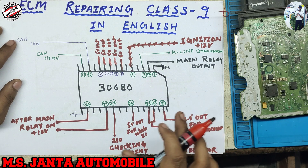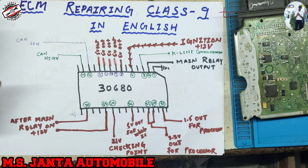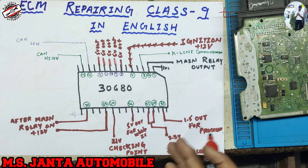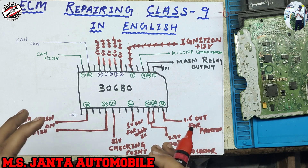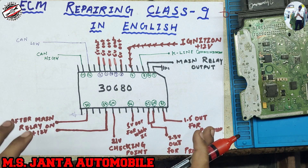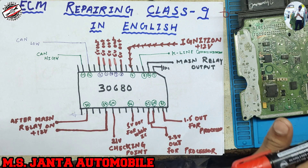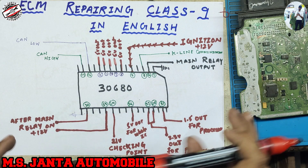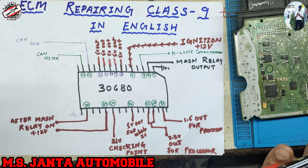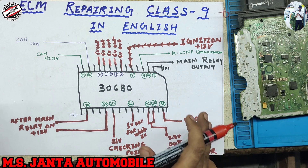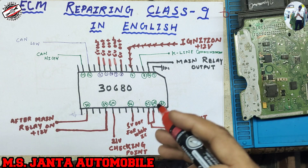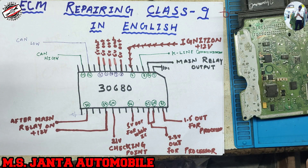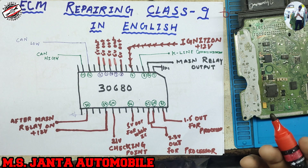Also, pin number 31 outputs 1.5 volts for the processor. These two voltages — 3.3V and 1.5V — are the most important for this IC. If these voltages are not created, nothing will work.